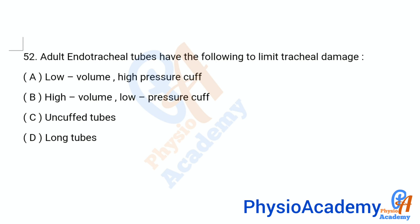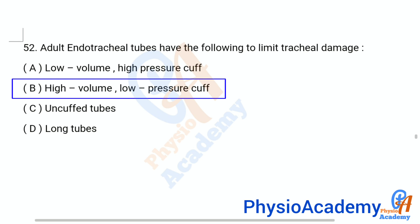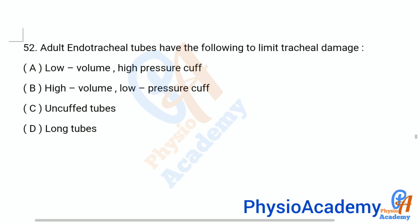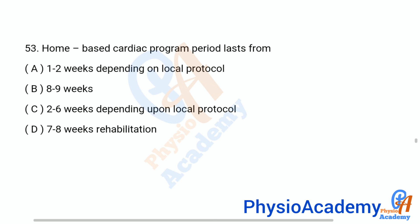Question 52: Adult endotracheal tubes have the following to limit tracheal damage. Option A: low volume high pressure cuff. Option B: high volume low pressure cuff. Option C: uncuffed tubes. Option D: long tubes. The correct answer is option B, high volume low pressure cuff.